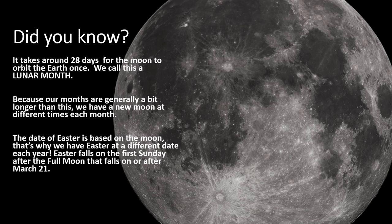Just a few facts before we get started. Did you know that it takes around 28 days for the moon to orbit or go around the Earth once? We call this a lunar month. Because our months are generally a bit longer than this, 30 or 31 days, we have a new moon at different times each month. When I say new moon, that's when the moon starts a new 28-day cycle. It doesn't actually mean we have a whole new different moon.